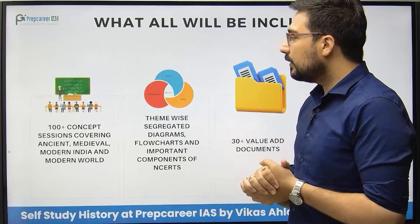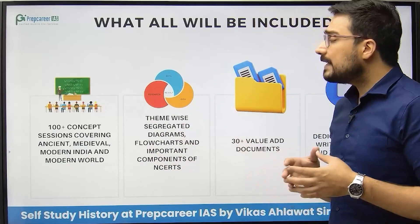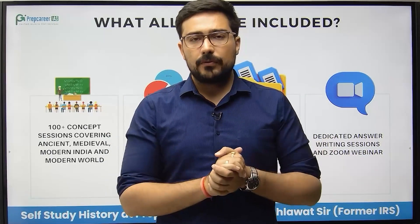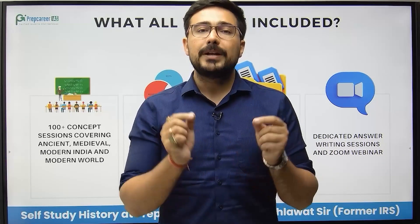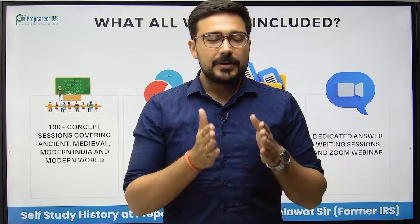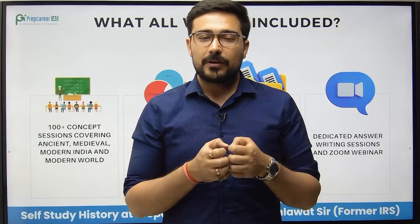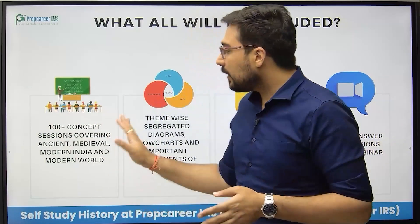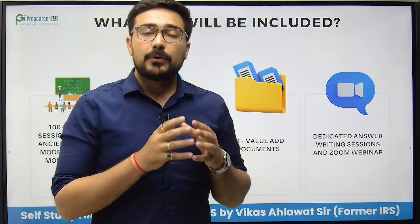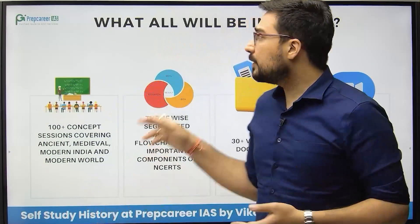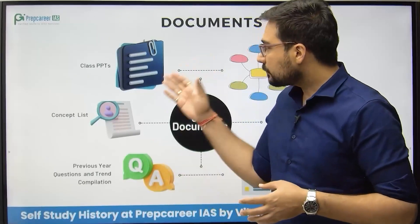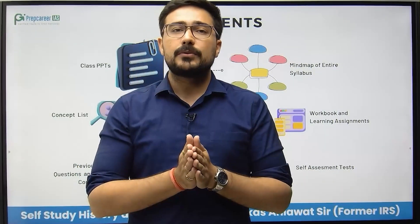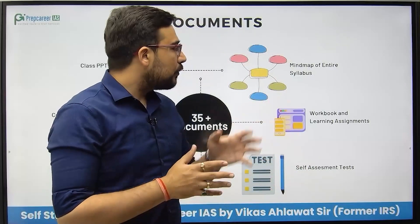The course includes 100 plus sessions covering all four parts with theme-wise segregation, diagrams, and flow charts. All important NCERTs — ancient, medieval, modern, and world history from various boards — totalling 25 to 26 NCERTs — have been combined into a coherent form. You will also receive 30 plus value-added documents, dedicated answer writing sessions, zoom sessions for doubt resolution, class PDFs, concept lists, PYQs, mind maps, workbooks, learning assignments, and self-assessment tests.